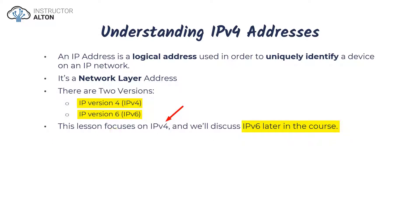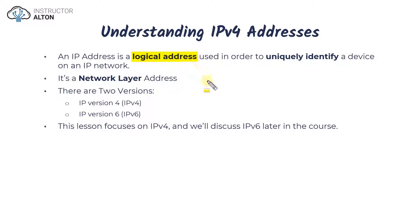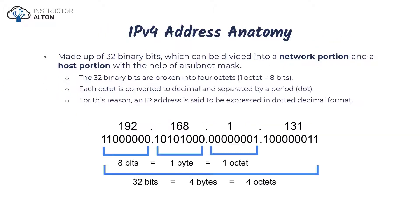Let's start with a refresher. We already know that IP addresses are logical addresses that we assign either manually or dynamically with DHCP, and that they operate at the network layer. Additionally, IP addresses uniquely identify a device on an IP-based network. Pretty basic stuff — so let's go ahead and take a deeper dive look.